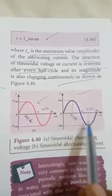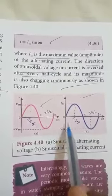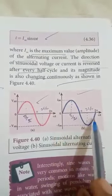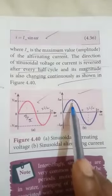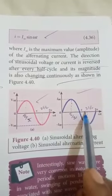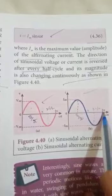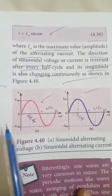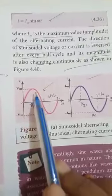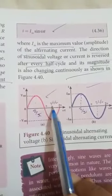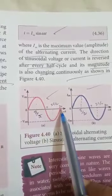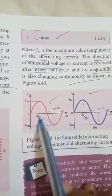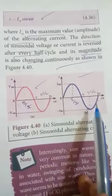For one complete cycle, we get one full sine waveform. The angle goes from 0 through π/2, π, 3π/2, to 2π. The same applies for the voltage: 0, π/2, π, 3π/2, 2π. So for one complete cycle, the angle is 2π. This is the sinusoidal alternating voltage and this is the sinusoidal alternating current.